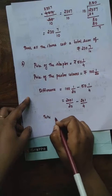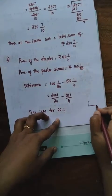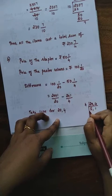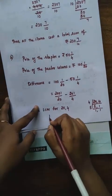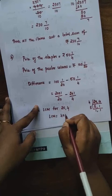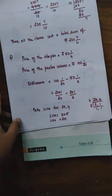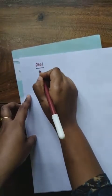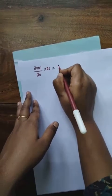Check the denominators — 20 and 4 are different. So we go for LCM. LCM for 20 and 4: using 4 table — 5×4 is 20 and 1×4 is 4. Our LCM is 4 × 5 = 20. So our LCM is 20. We are going to change the denominator to 20.